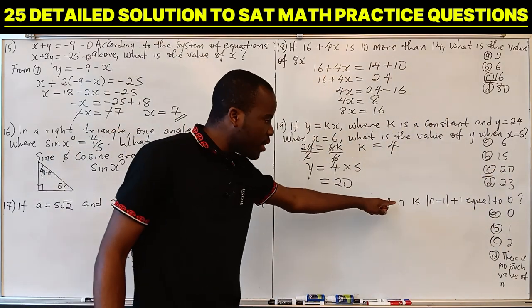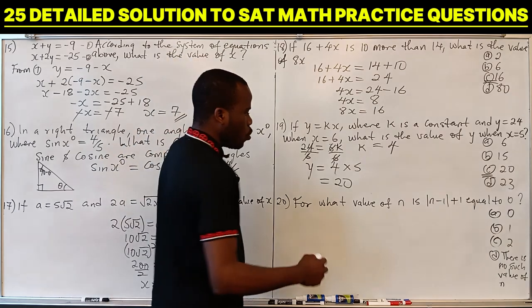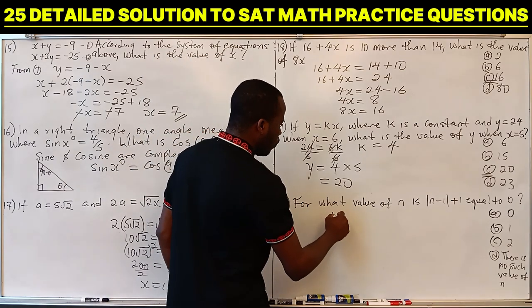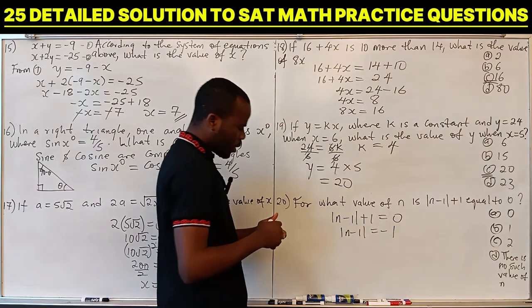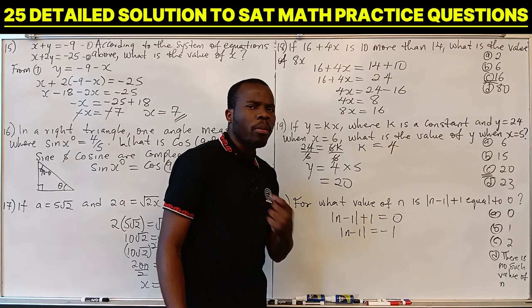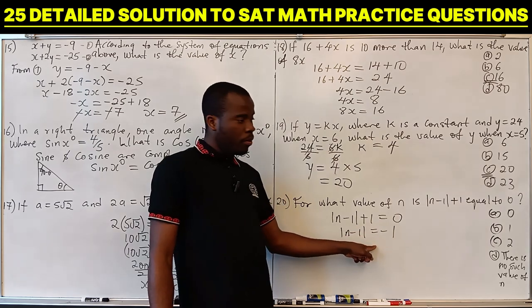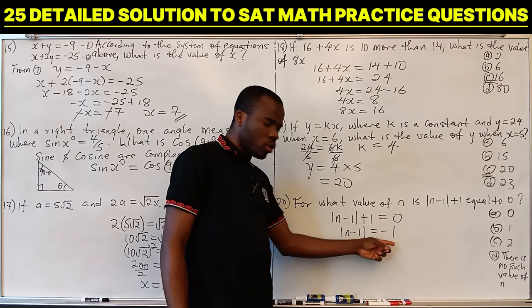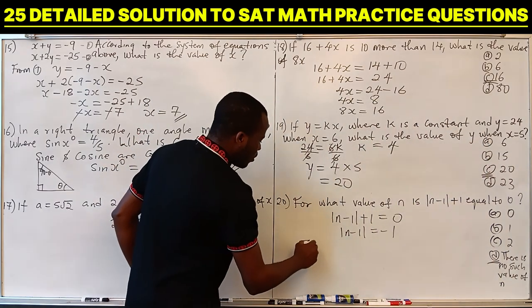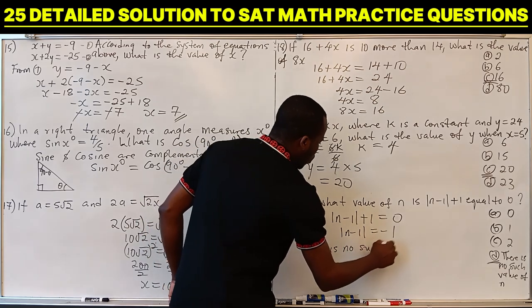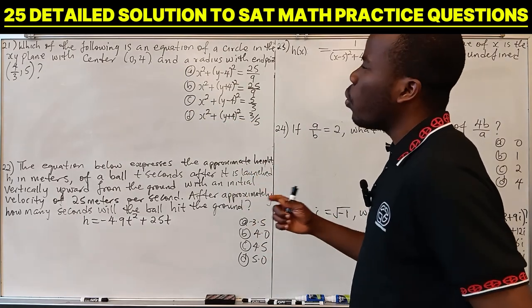Question 20: for what value of N is the absolute value of (N minus 1) plus 1 equals 0? This means the absolute value of (N minus 1) equals minus 1. But the absolute value of any number cannot be negative — it is always non-negative. Therefore there is no such value of N, and the answer is D.